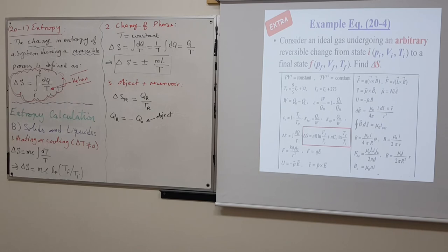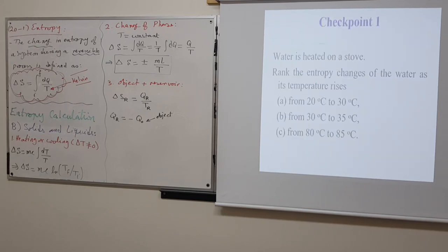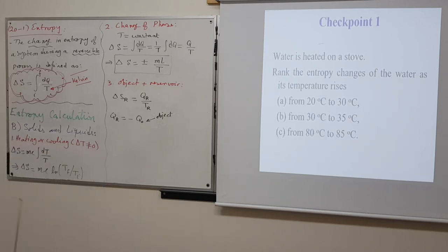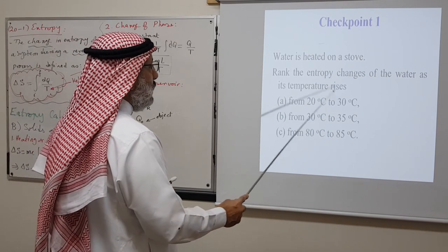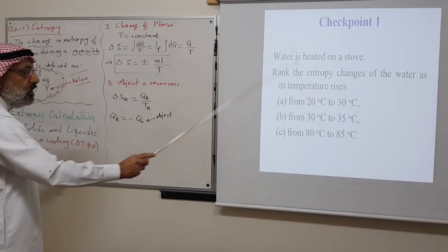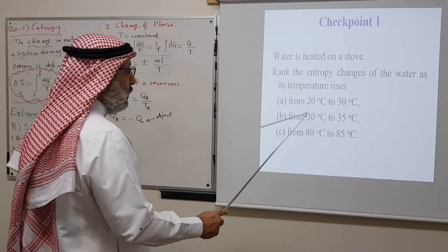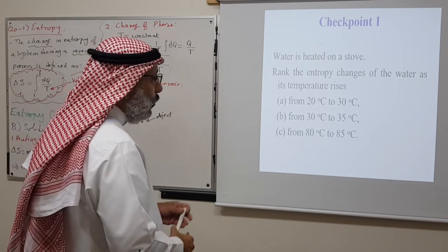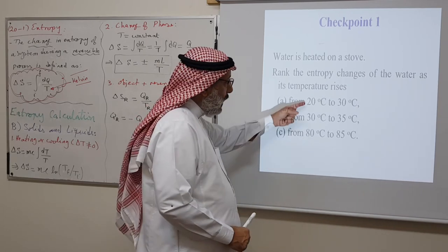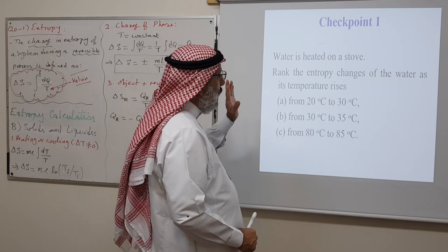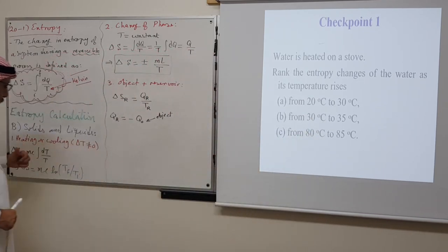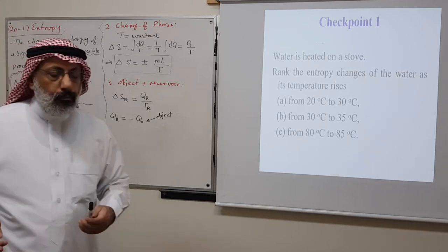Let's look at some checkpoints. Water is heated on a stove. The entropy change as the temperature rises from 20°C to 30°C: convert to Kelvin, T_f = 303 K, T_i = 293 K, then use ΔS = mc ln(T_f/T_i). Do the same from 30°C to 35°C and 80°C to 85°C. Even though ΔT is the same, ΔS will differ — always convert to Kelvin first.